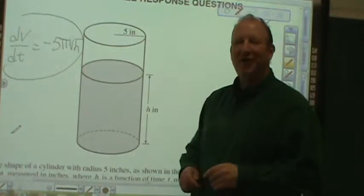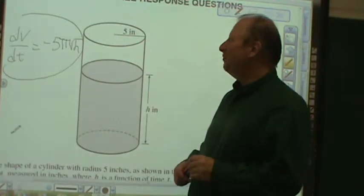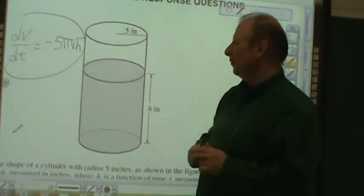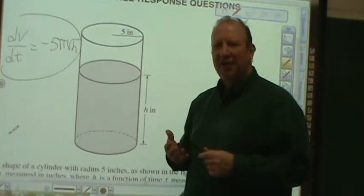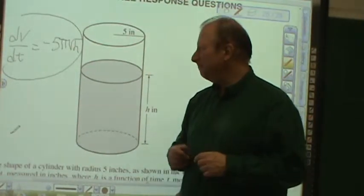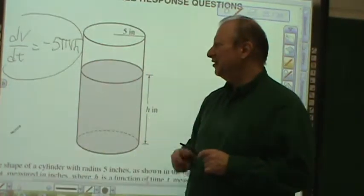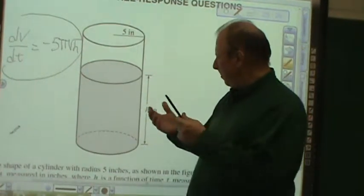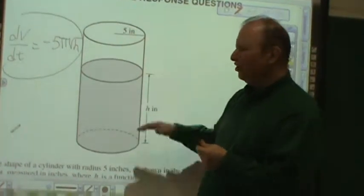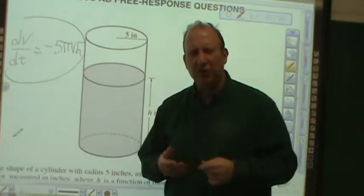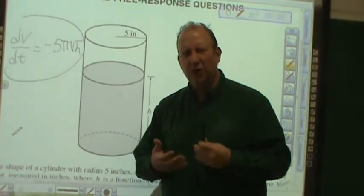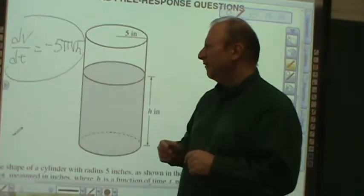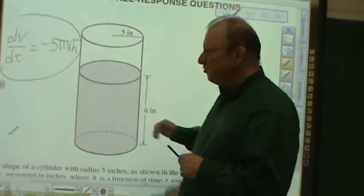Hi, what I'm going to be doing right now is 2003 AP Calculus AB free response question number 5. The question basically asks, the first step will be, if dv/dt is negative 5π√h, what is dh/dt? In other words, let's look at what the question is asking first, because I'm doing a related rates type problem. The question is asking,